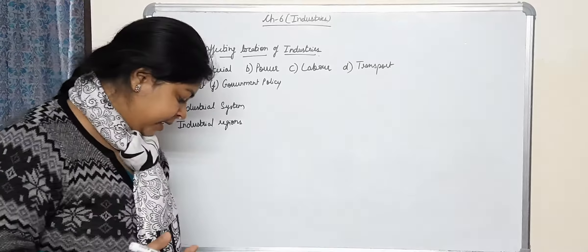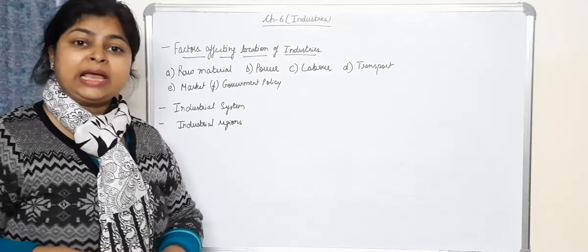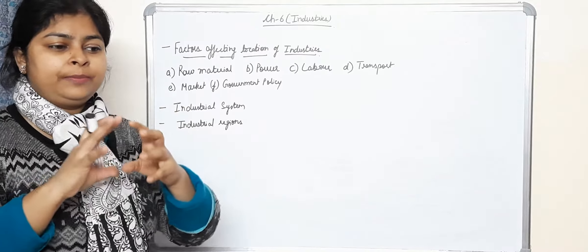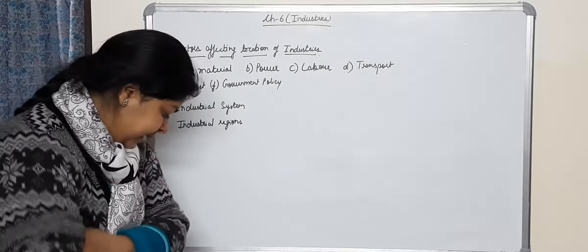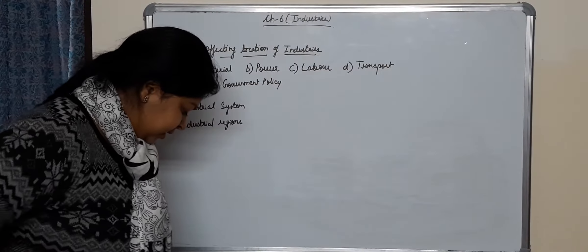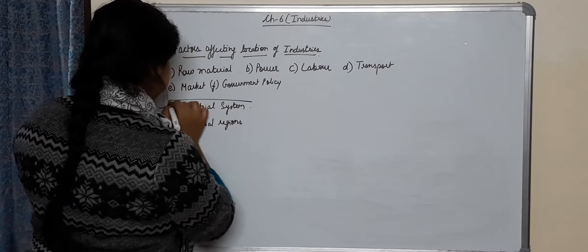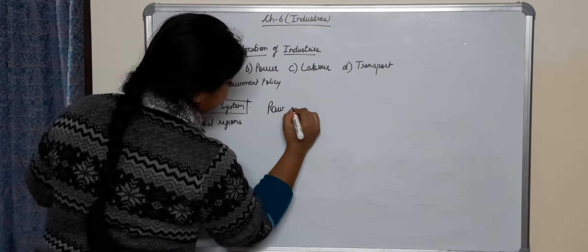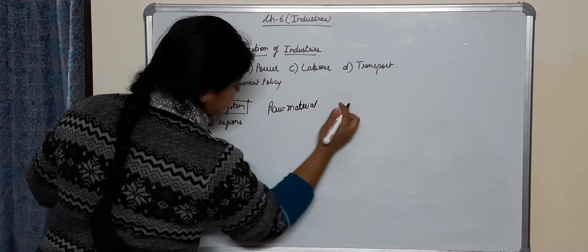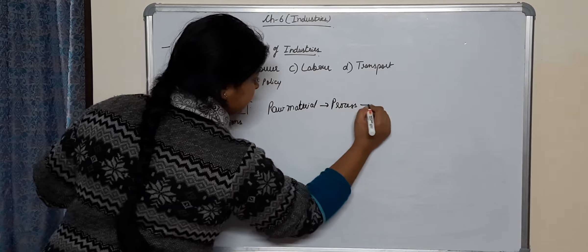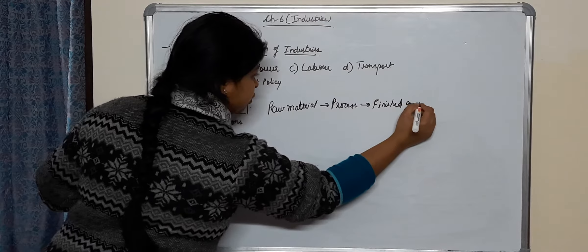Next we have industrial system. What do you mean by industrial system? A system, a way of working. In the book page number 162, industrial system consists of input, process and output. Raw material being processed and then converted to finished goods.